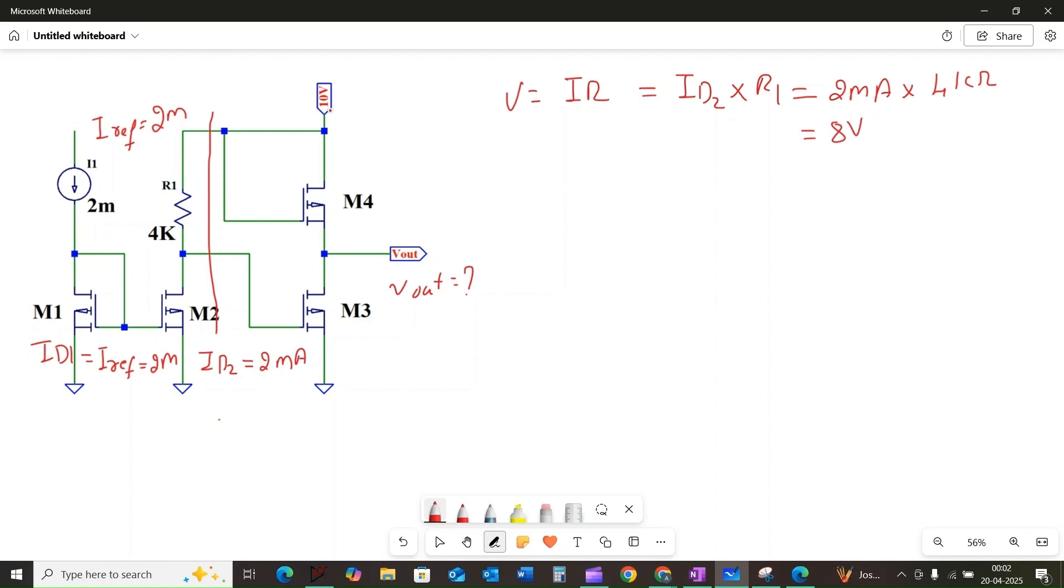Now, the top end of the resistor is connected to the power supply of 10 volts. Therefore, the gate voltage of MOSFET M3, let's call it VG3, will be equal to 10 volts minus 8 volts. VG3 equals 10 volts from the supply minus the voltage drop across the resistor R1, which is 8 volts. We get the gate voltage VG3 is equal to 2 volts.